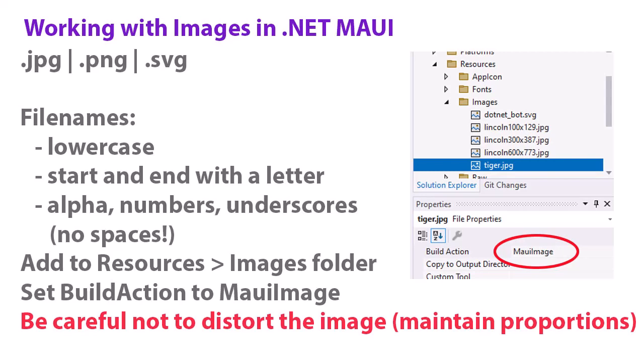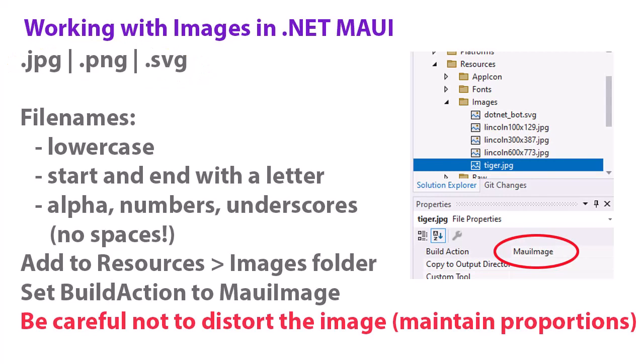.NET MAUI supports various formats. The most popular, of course, are going to be JPEGs and PNGs. You want to use a PNG if there's anything that you want to have transparent. And then you can also use vector graphics saved in an SVG or Scalable Vector Graphic format. By the way, the Scalable Vector Graphic will convert to a PNG inside of .NET MAUI.